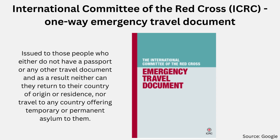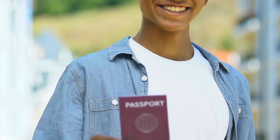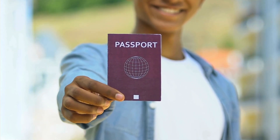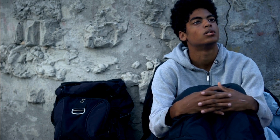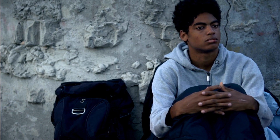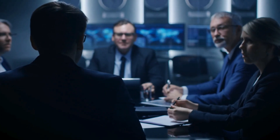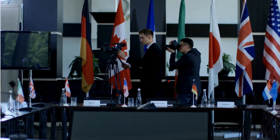In certain exceptional circumstances, the International Committee of the Red Cross can also issue a one-way emergency travel document to those people who either do not have a passport or any other travel document, and as a result can neither return to their country of origin nor travel to any country offering temporary or permanent asylum. It's important to understand that these documents are specific to the organization and their personnel, and are designed for official travel related to the work of these international entities.